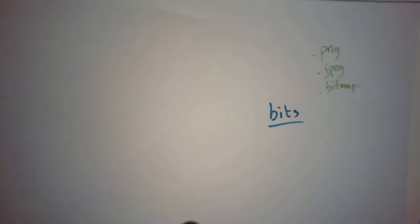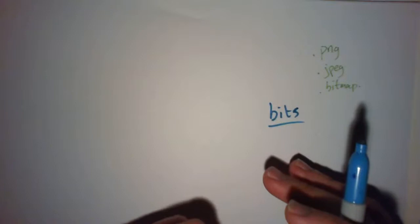We're going to go super basic. At the end of the day, everything is stored as bits - ones and zeros. No matter what it is, whatever color, whatever image it is, is broken down into bits.